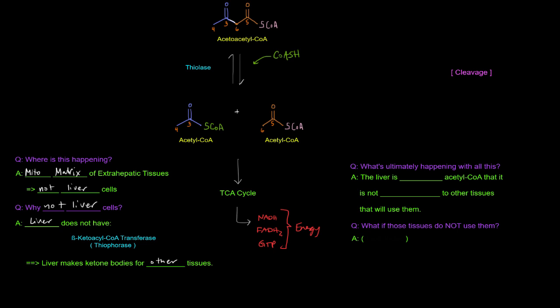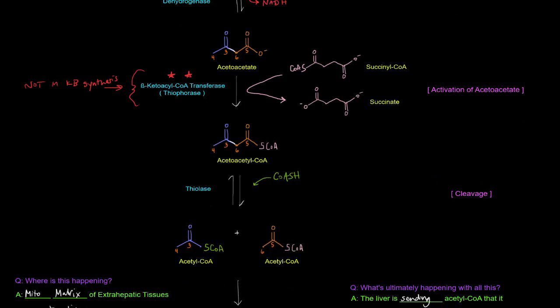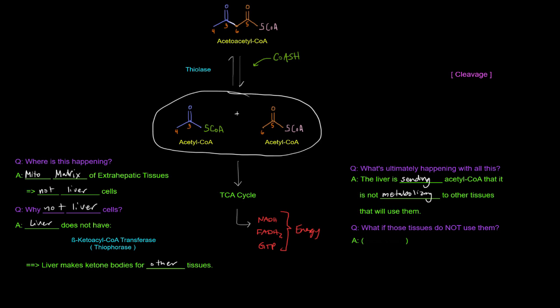Well, basically what happened is that the liver is sending acetyl-CoA by way of ketone bodies that it's not metabolizing. It's sending them to other tissues that will use them. So we basically took acetyl-CoAs that were in the liver, converted them to ketone bodies, just so that they could travel in the blood to get to these extra hepatic tissues. And then we took that ketone body that we started with, which came from the liver, and we just converted it back into acetyl-CoAs. Except now these acetyl-CoAs are no longer in the liver. They're in these other tissues that are going to break them down for energy.